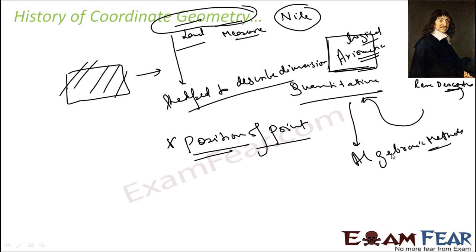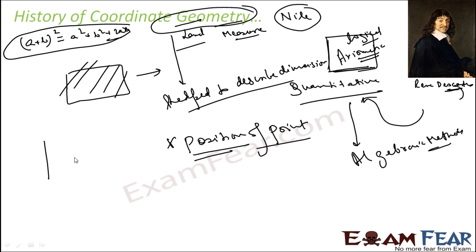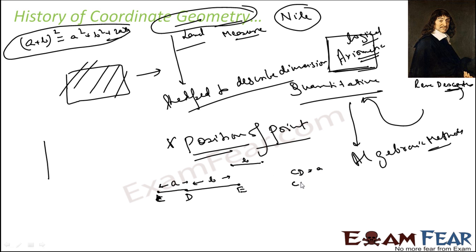This was much better than the purely axiomatic or logical approach. For example, we know that (a + b)² = a² + b² + 2ab. You can explain this using geometry. Let's say line CD has length a and line DE has length b, making the total line CE of length (a + b). To prove (a + b)², we build a square of side (a + b).